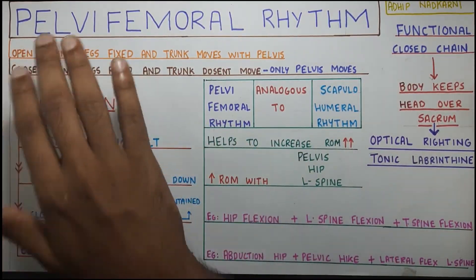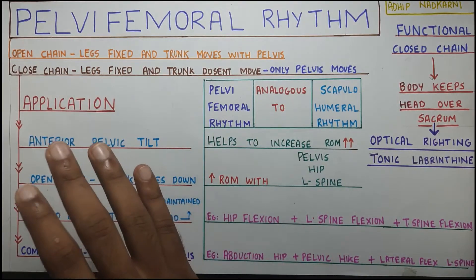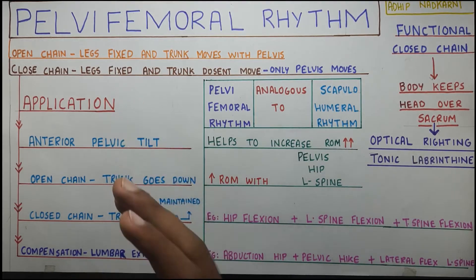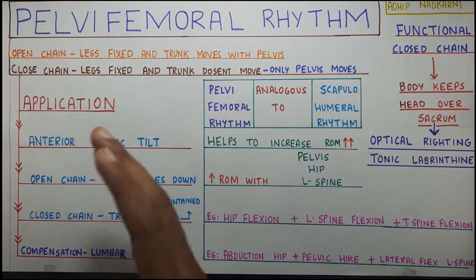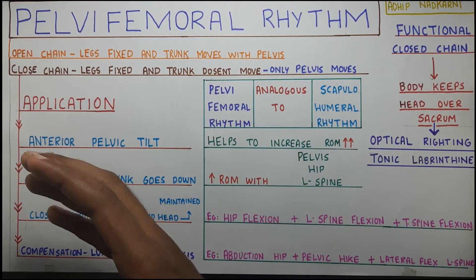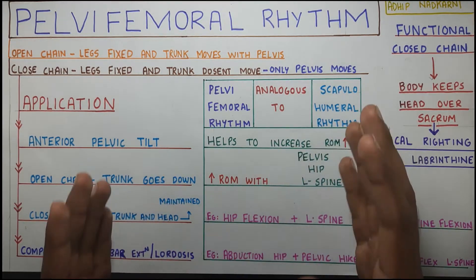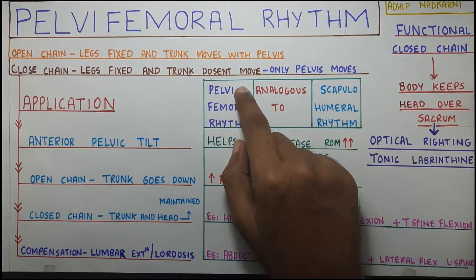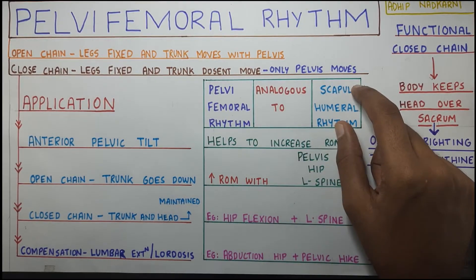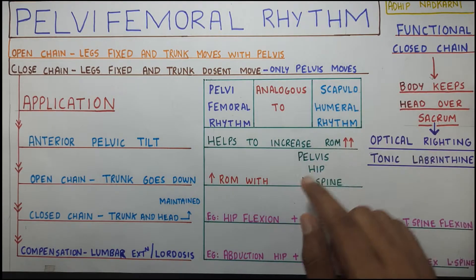That was about open and closed kinematic chain. Now going to the next part: the Pelvi-Femoral Rhythm, which is analogous to your scapulohumeral rhythm - meaning they are very similar. The main similarity is that both of them help increase your range of motion.